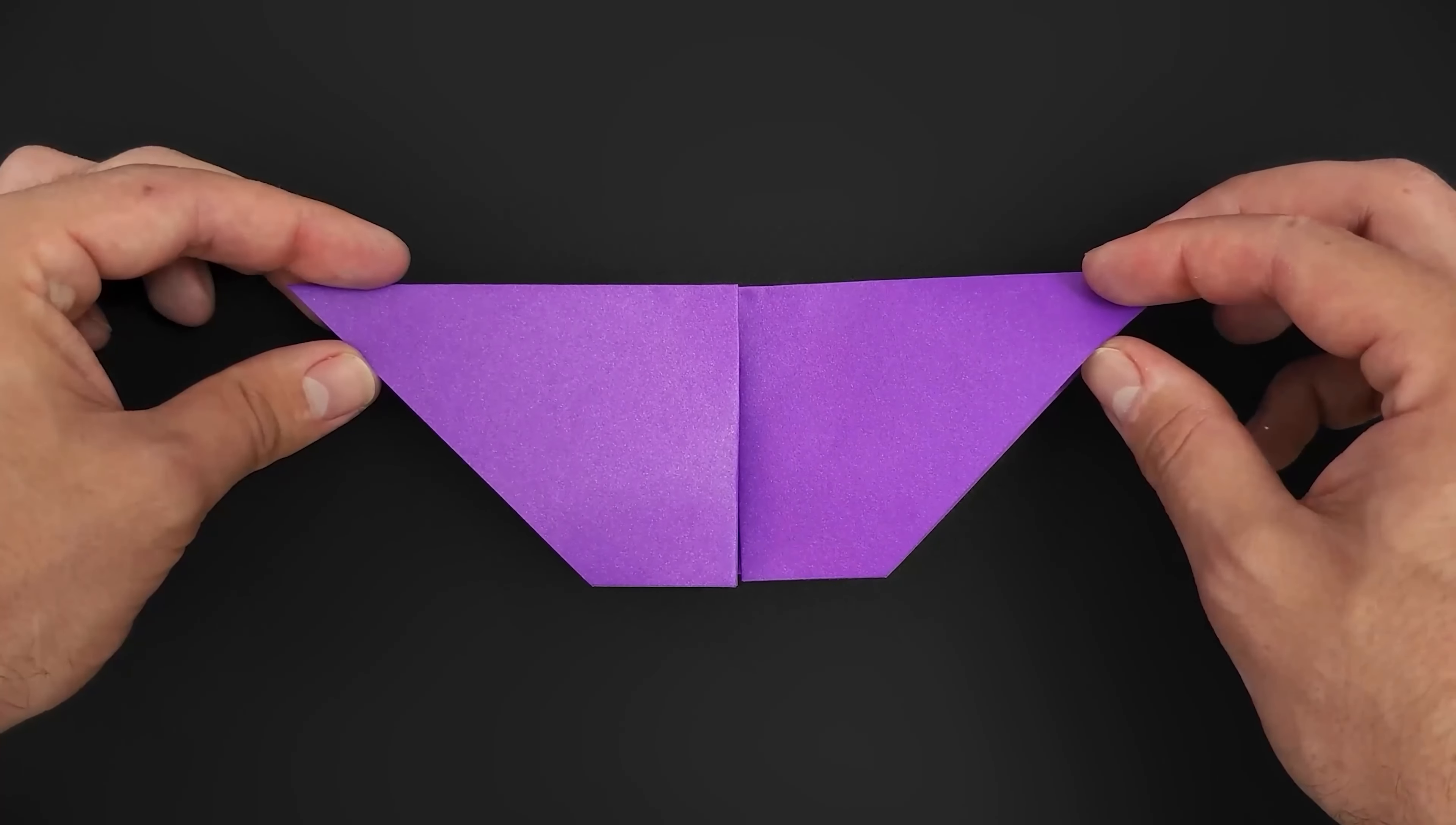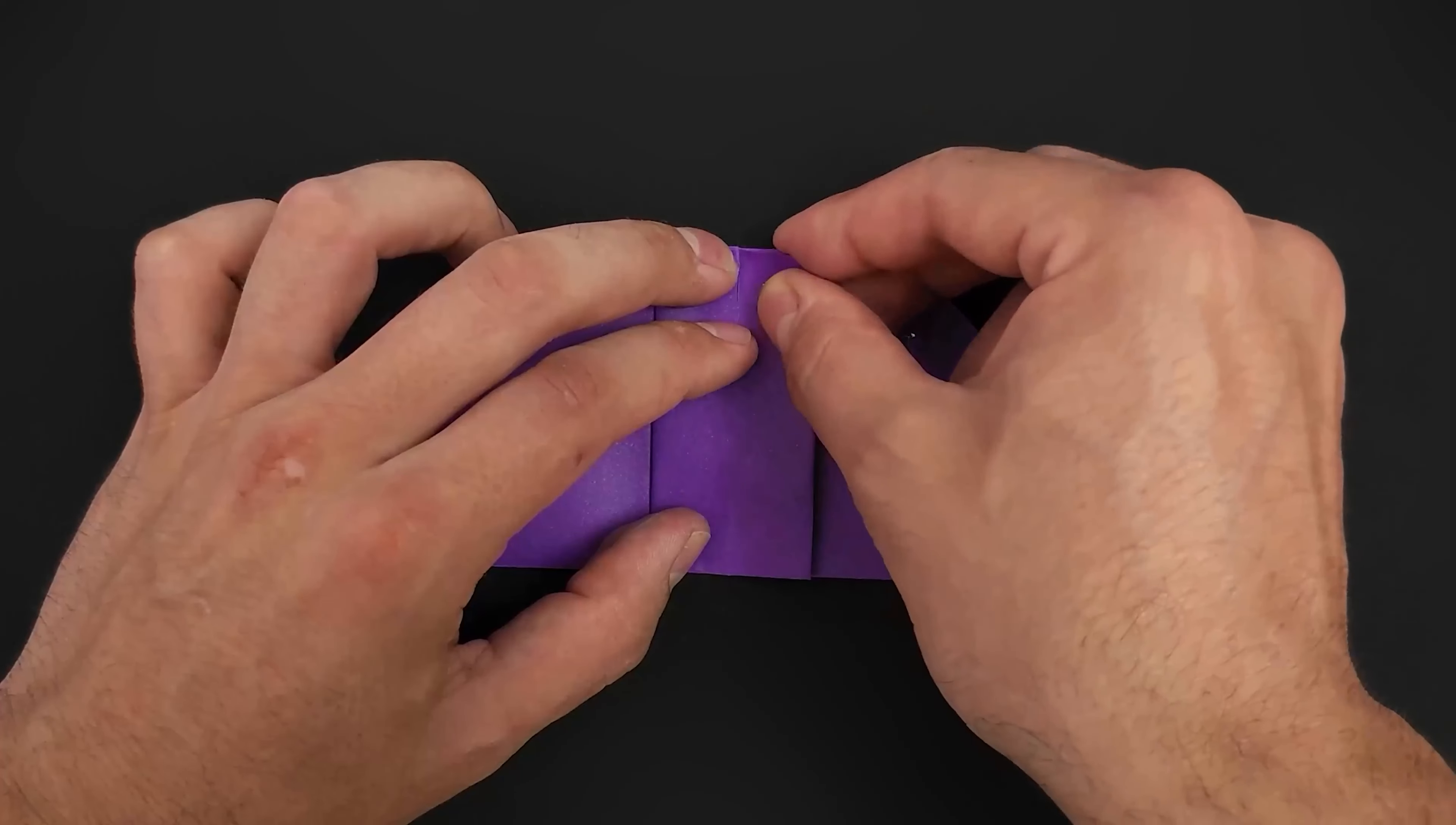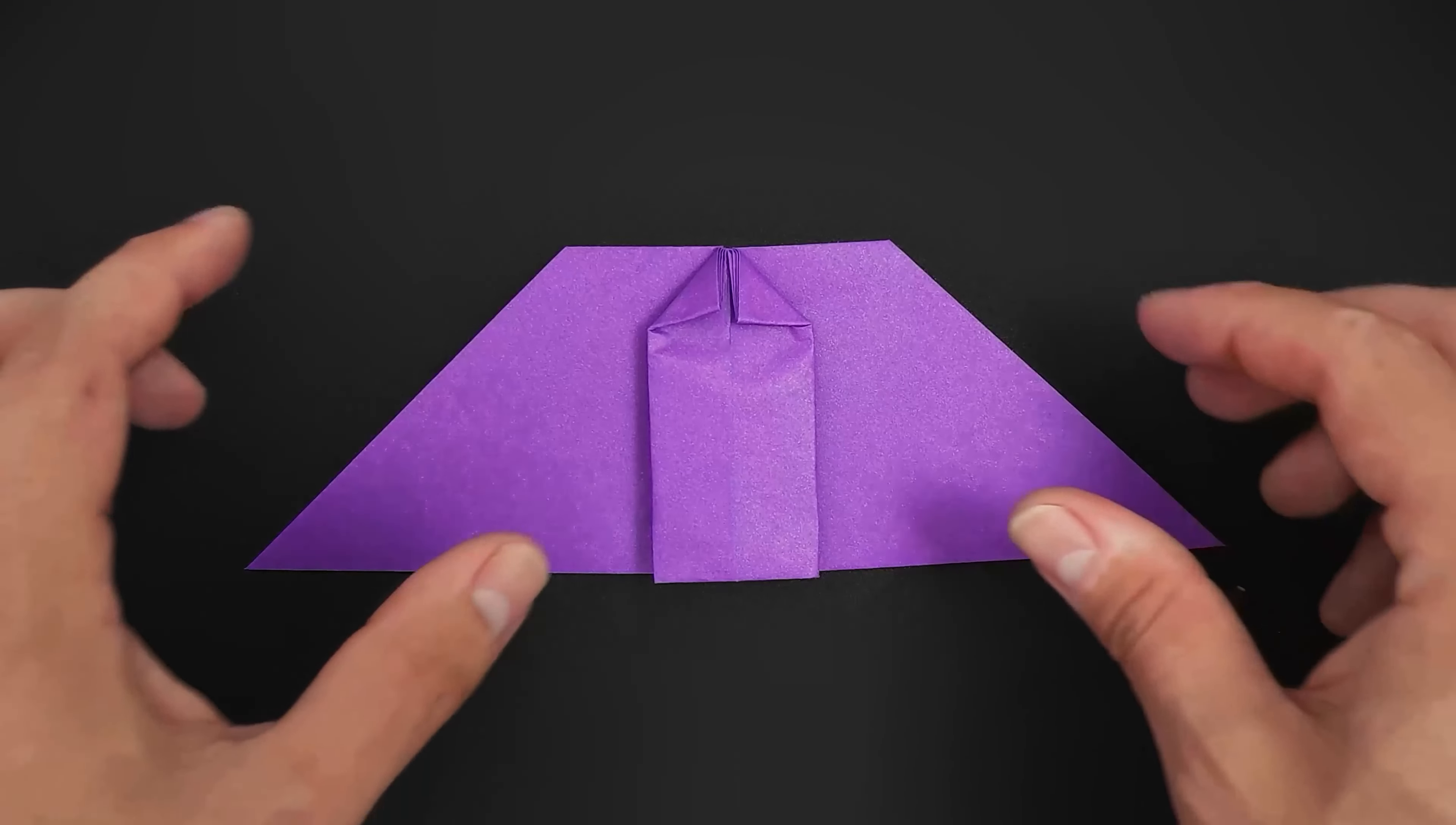Turn the paper over again, keeping this position, and reinforce everything. In the central part, fold the two top corners. Unfold both.